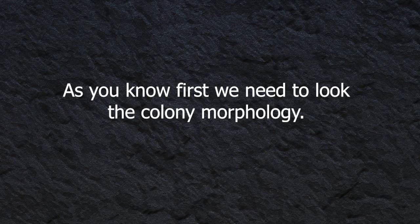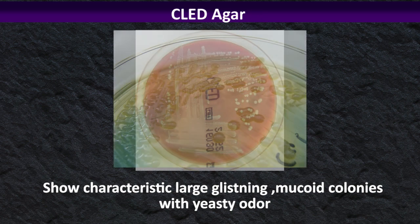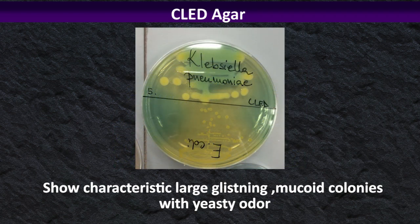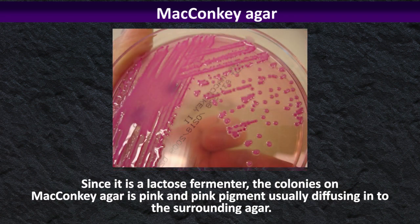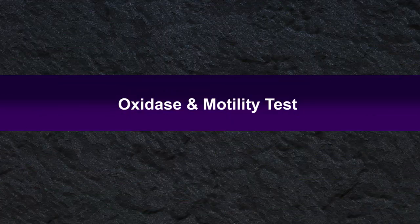First, we need to look at colony morphology. Klebsiella species grow readily on ordinary media and show characteristic large glistening mucoid colonies with a yeast odor. Since it is lactose-fermenting, the colonies on MacConkey agar are pink, with pink pigment usually diffusing into the surrounding agar. The gram stain shows a gram-negative rod which is similar to other coliforms.